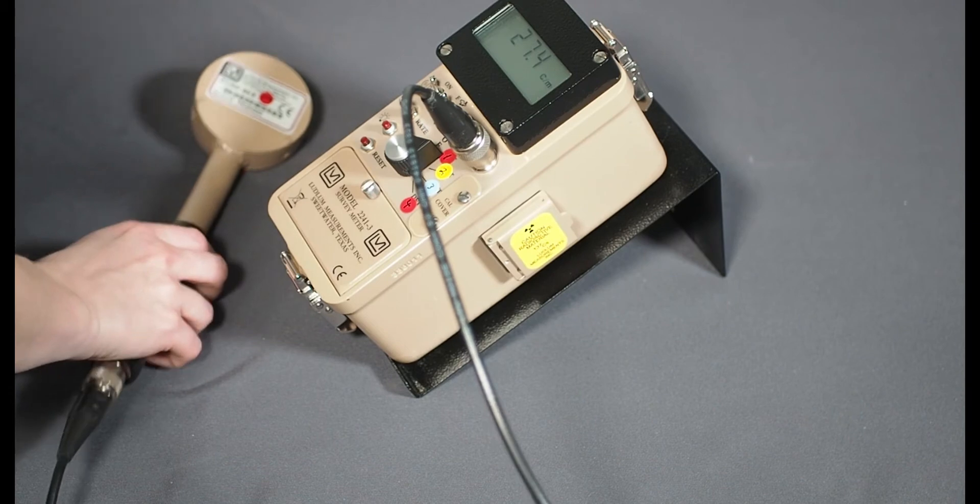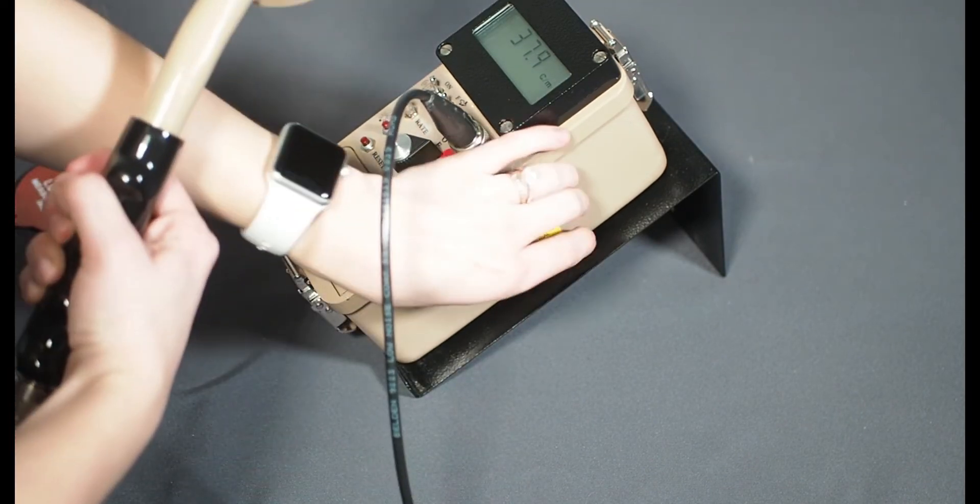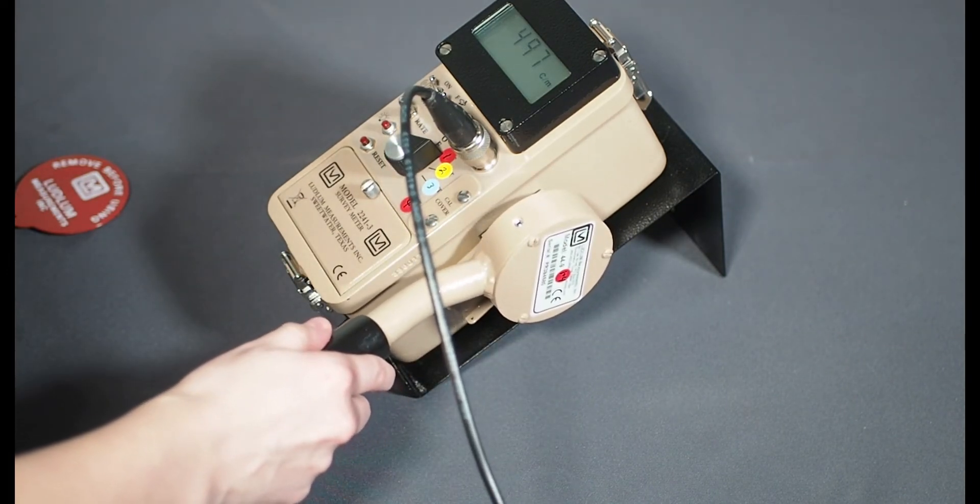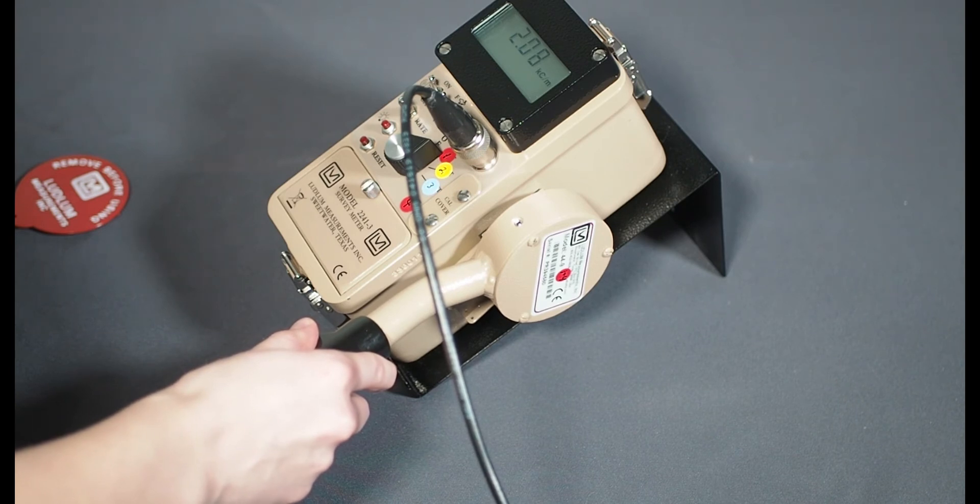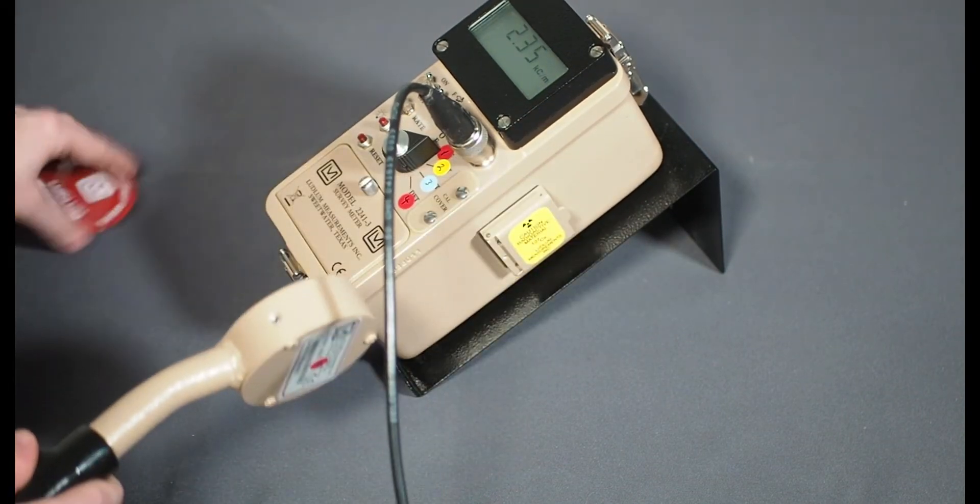Perform the check source test by opening the check source cover door and placing the face of the 44-9 against the check source. Compare the reading to the reference reading listed on the calibration sticker on the side of the meter. If the reading is within plus or minus 20%, then it passed the test and the instrument is ready to use. If not, the detector should be taken out of service.